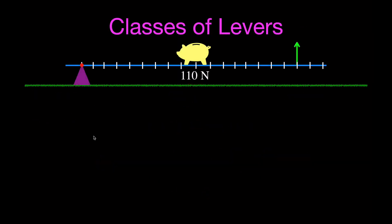Now we have a different class of lever — example three. This is a piggy bank that applies a force of 110 Newtons at a certain position. We want to know how much force we'd need to apply at another position to lift that piggy bank. We call the piggy bank's force F₁ (output force) and the applied force F₂ (input force). The fulcrum is outside both forces, with the output force in the middle between the fulcrum and the input force — making this a second-class lever.